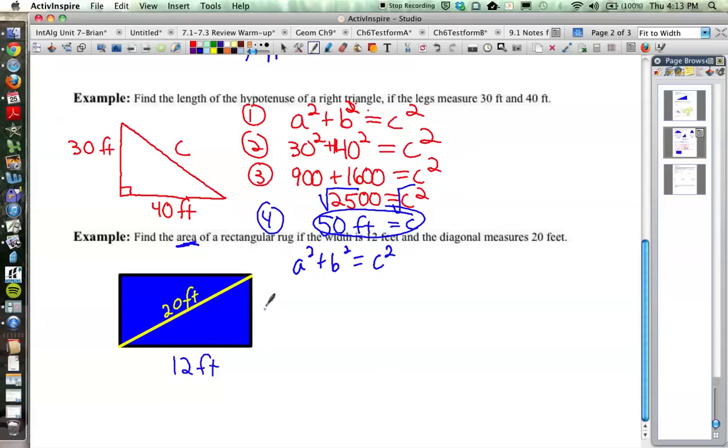And we have, well, let's call this a right here. So a squared plus 12 squared is equal to 20 squared. Because 20 is our hypotenuse. So that means that we have a squared plus 144 is equal to 400.